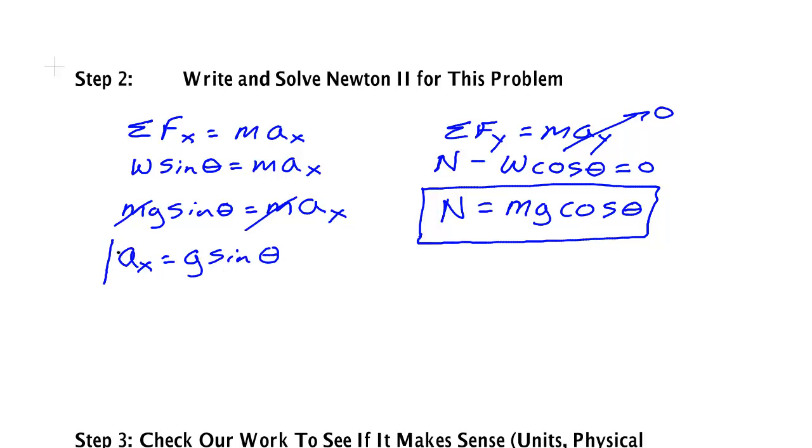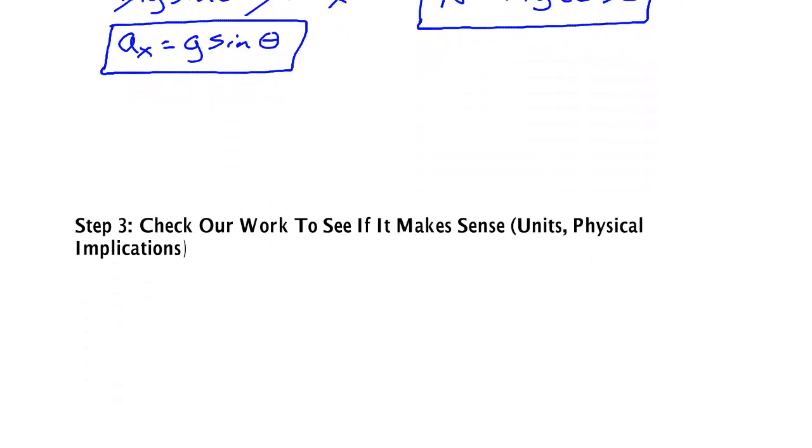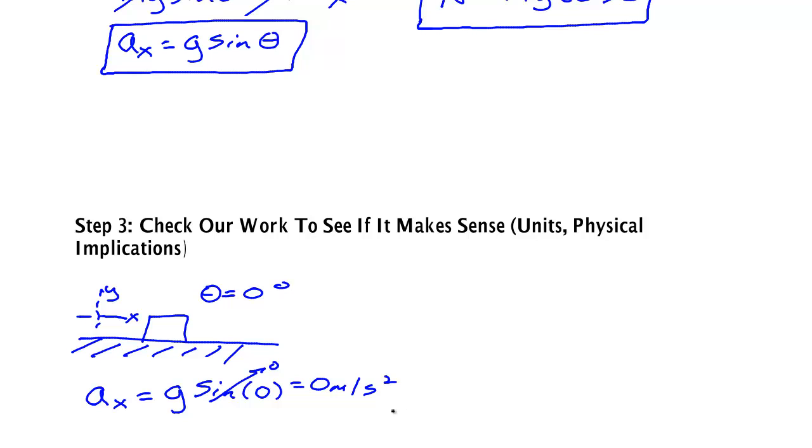Now, once you get an equation before you start doing anything with it, you need to check to make sure it makes sense. So let's check to see if this thing makes sense. Let's take a couple of extreme cases. One case would be if we made our incline plane flat. So theta was zero degrees. If it was a horizontal flat table, I know the acceleration would be zero. The block wouldn't want to move. Let's see if my formula gives me that. a_x is equal to g times the sine of zero degrees. But the sine of zero is zero. So I get zero meters per second squared. Check. That makes sense.